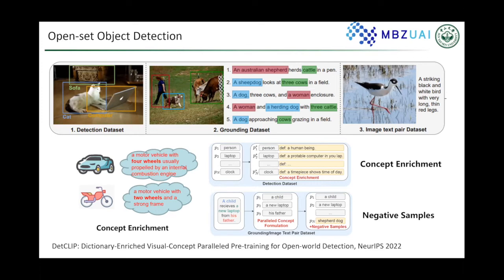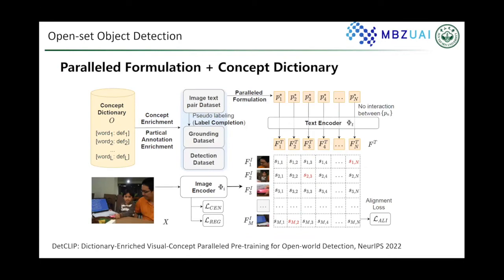Existing datasets often have a large domain gap and differences in their labeling space. To form a more unified concept space and provide prior knowledge for each input context, we propose a novel concept dictionary to enrich our prompt text during joint pre-training. DeckCLIP further readily samples concepts from this dictionary as negative samples to efficiently pre-train with the alignment loss.